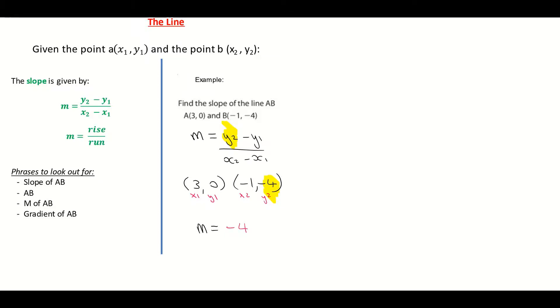Then the formula tells me to use my subtraction, so I'm going to subtract my y1. My y1 is 0, so I'm subtracting 0. That's all being divided by my x2.